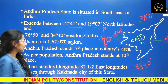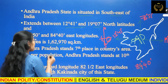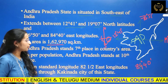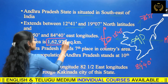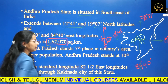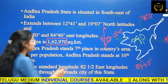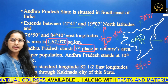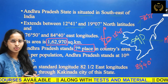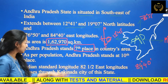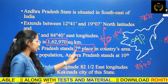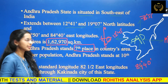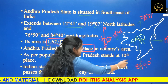Area-wise, Andhra Pradesh has an area of 162,970 square kilometers. It stands in 7th place in India as per area. Population-wise, it stands in 10th position.